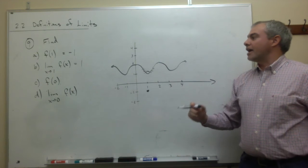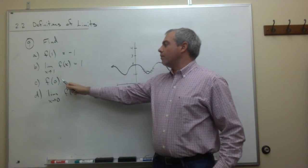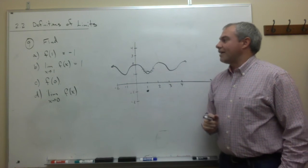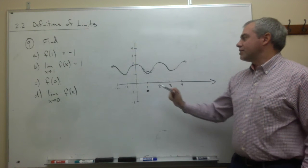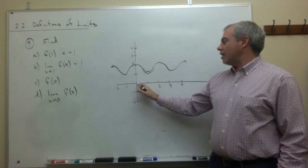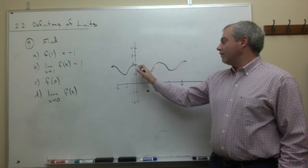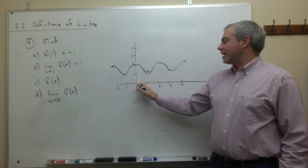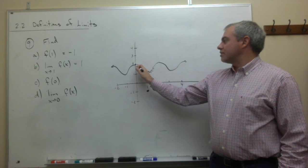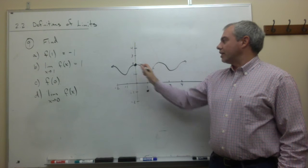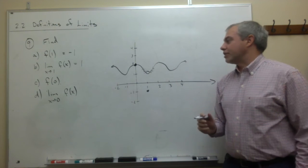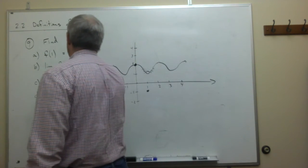Now let's take a look at part C. Part C asks, what is f of 0? Well, f of 0 is just saying, is there a point directly above or below the x value 0? And there is. It's above. It's right here. And so f of 0 in this case is 2.